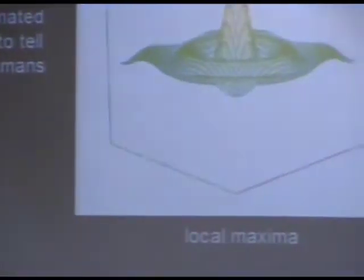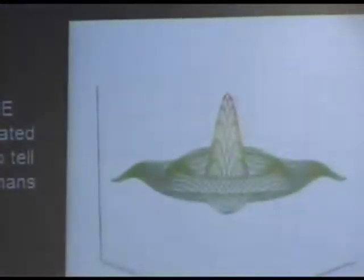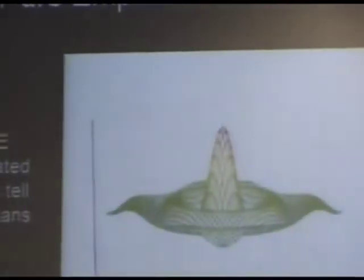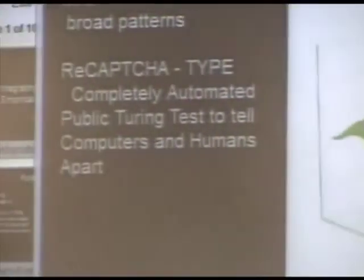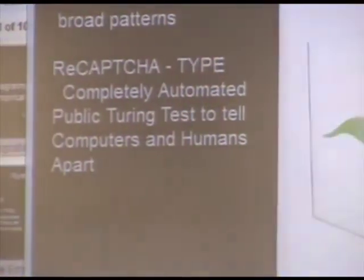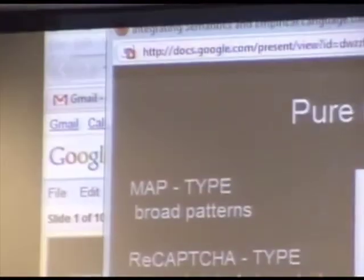There are a couple of types of chatbot strategies that I've noted. One is what I call pure empiricism — basically they're clever mappings of inputs to outputs. Some are broad pattern-based things, kind of like ELIZA, and some are what I call 'recaptcha type.'